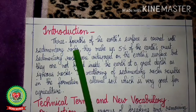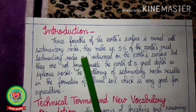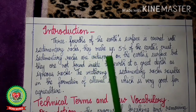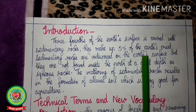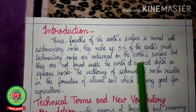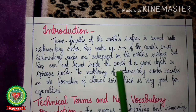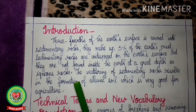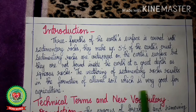Three-fourths of the earth's surface is covered with sedimentary rocks. Sedimentary rocks make up about 5% of the volume of the earth's crust. They are widespread on the earth's surface but are not found inside the earth at great depth like igneous rocks. The weathering of sedimentary rocks results in the formation of alluvial soil, which is very good for agriculture.